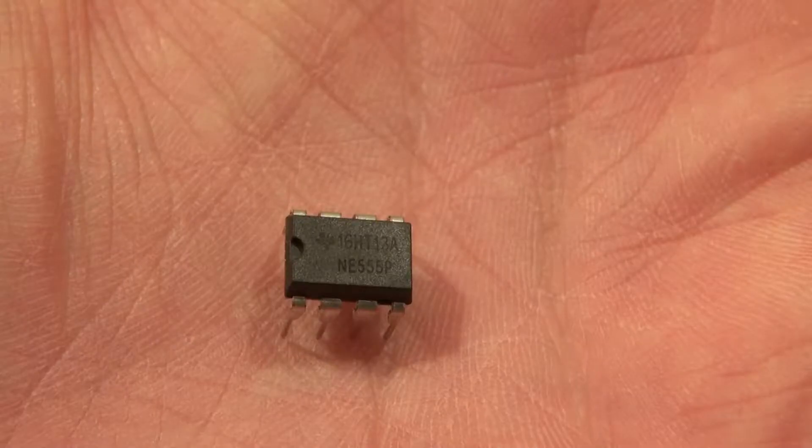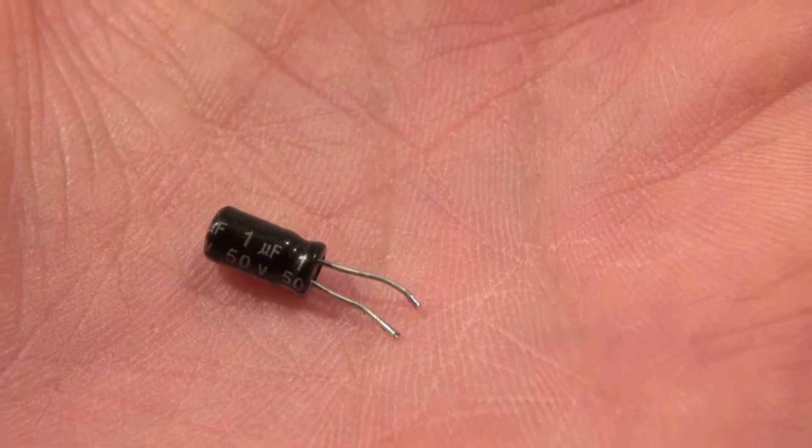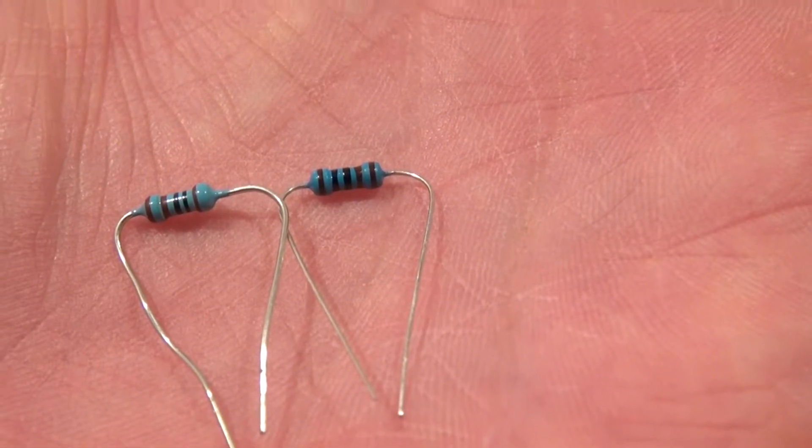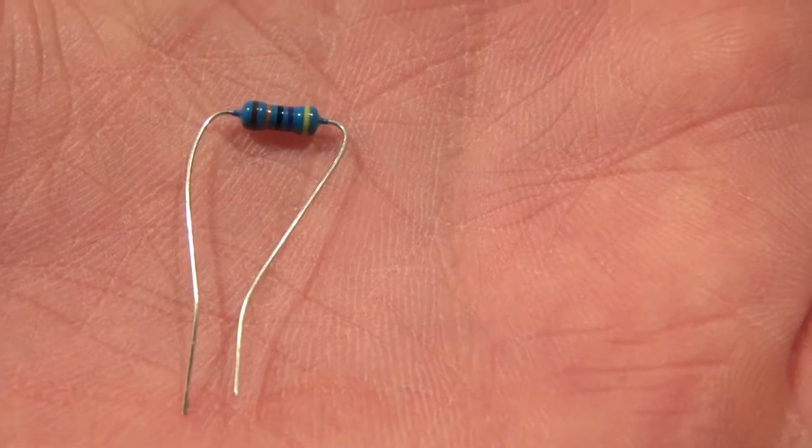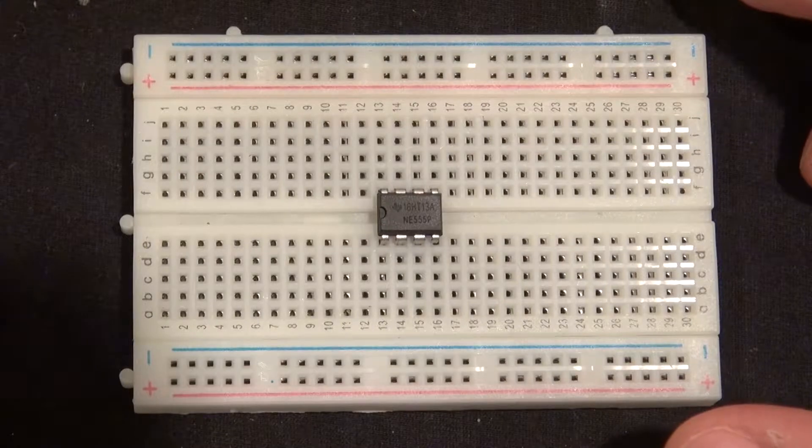The items you'll need are a 555 timer integrated circuit, a simple LED, a 1 microfarad electrolytic capacitor, two 1k ohm resistors and a 470k ohm resistor, some jumper wires, and of course your breadboard.